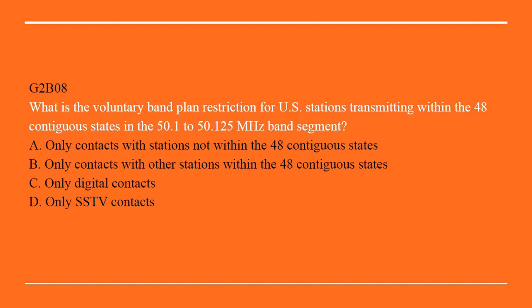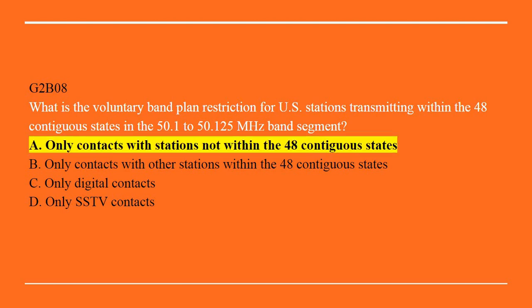G2B08: What is the voluntary band plan restriction for U.S. stations transmitting within the 48 contiguous states in the 50.1 to 50.125 MHz band segment? A. Only contacts with stations not within the 48 contiguous states. B. Only contacts with other stations within the 48 contiguous states. C. Only digital contacts. Or D. Only slow scan TV contacts. Correct answer is A: Only contacts with stations not within the 48 contiguous states.